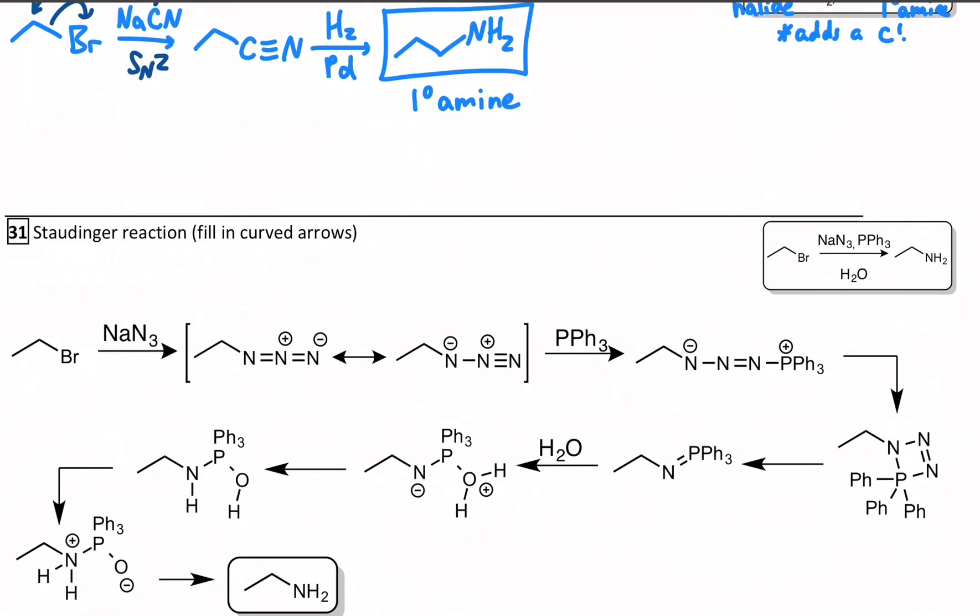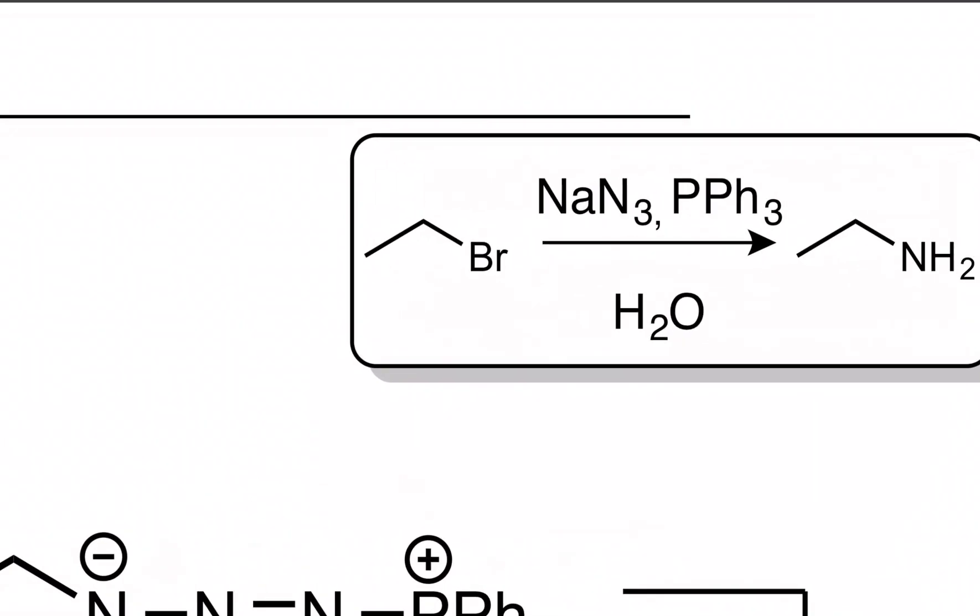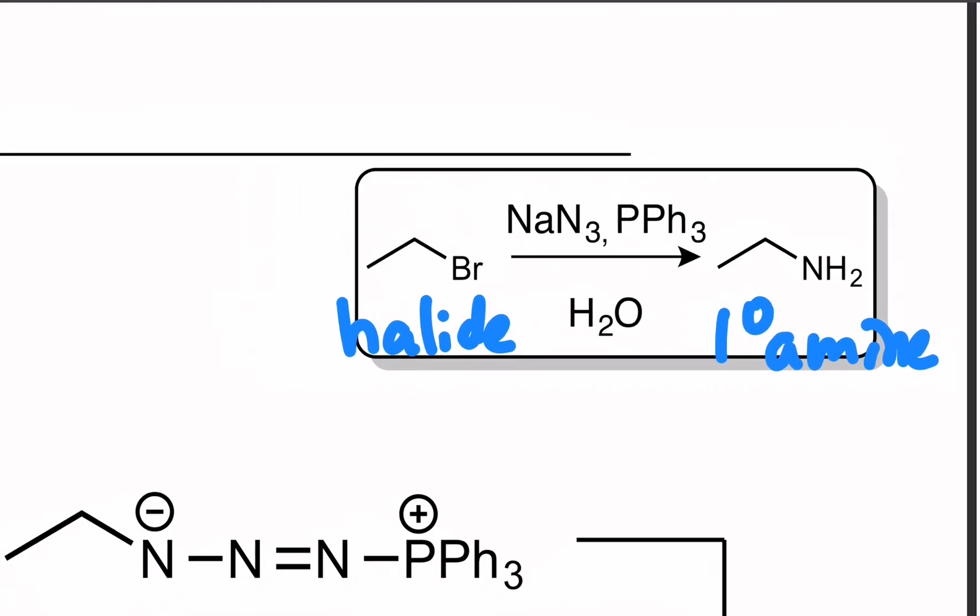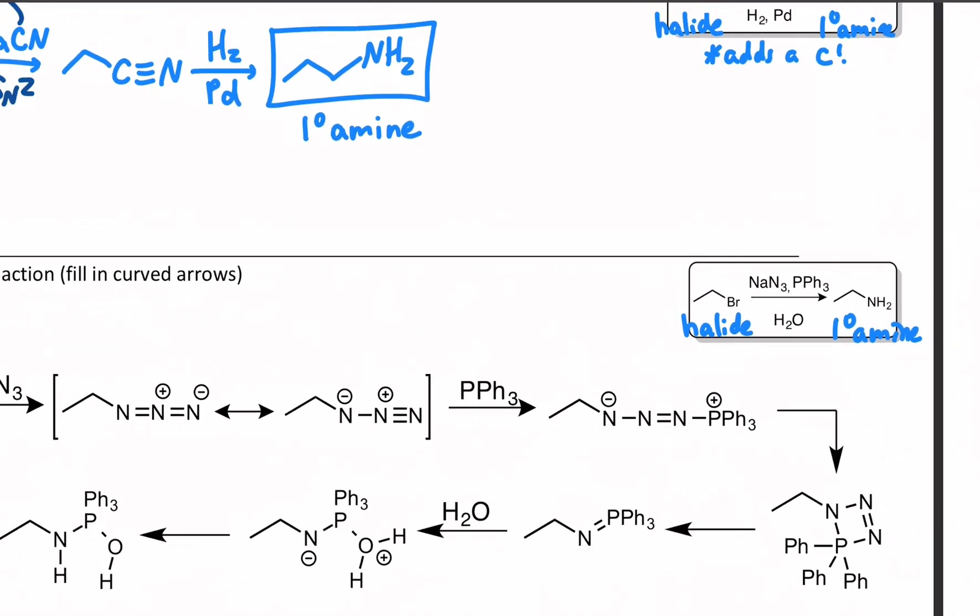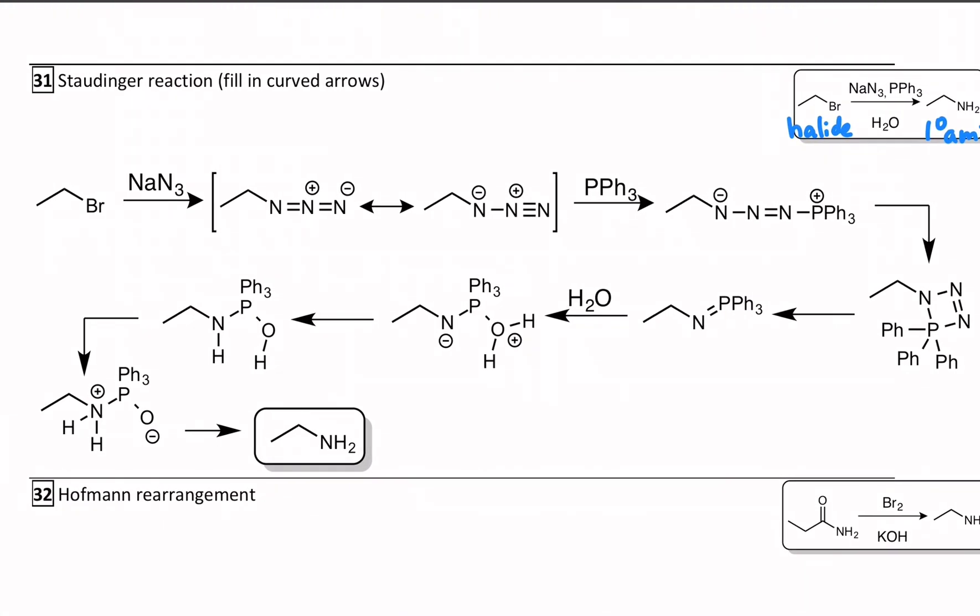So those are two very straightforward ways to make amines, both from bromides. The Gabriel keeps the carbon count, the nitrile reduction adds a carbon. There are a few others. The third one for today is called the Staudinger synthesis. In terms of synthesis strategy, it's essentially the same as the Gabriel. It takes a halide and turns it into a primary amine and it keeps your carbon count. And this mechanism is pretty unique compared to some of the steps we've seen. But for good arrow-pushing practice, I'd like you to hit pause and try and do the curved arrows for this mechanism.